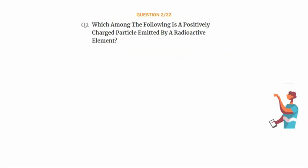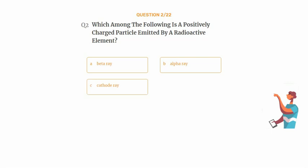Question number 2. Which among the following is a positively charged particle emitted by a radioactive element? Option A: Beta. Option B: Alpha. Option C: Cathode Ray. Option D: Gamma.